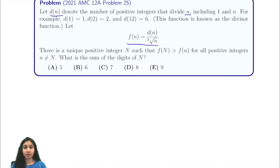So for f(2) this is equal to the number of divisors of 2 over the cube root of 2, and f(3) is equal to the number of divisors of 3 over the cube root of 3.